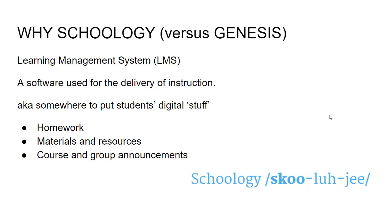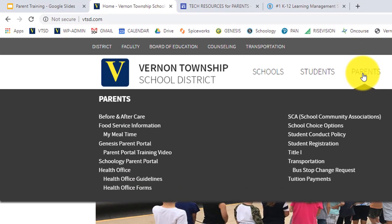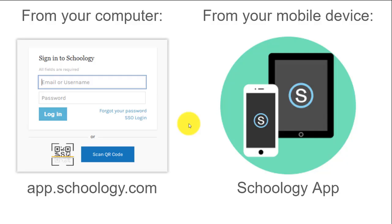To log in, go to our website under the Parents section — you may have already noticed a new Schoology parent portal link. We took basically anyone we had an email for and created them an account. I'm going to send out a link later today — it's Monday in September — that will let parents reset a password with their email address. We loaded in about three or four thousand email addresses.